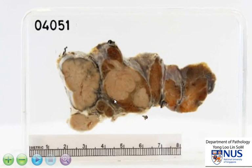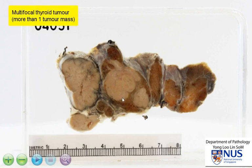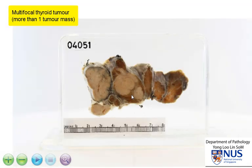Here is an example of a tumor in the thyroid gland that is multifocal, in which we see multiple nodules, or more than one nodule. And whenever we see a multifocal tumor mass in the thyroid gland, there will be several differential diagnoses. We have to consider papillary thyroid carcinoma, which is the commonest primary thyroid malignancy, and not infrequently occurs as multiple tumor nodules.